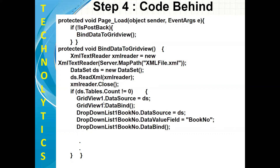My first control is GridView1. I'm writing GridView1 and the property DataSource — so GridView1.DataSource equals DS. I'm using the DataSource of my grid view as DS. But only by using the DataSource property, I cannot bind the data. For binding the data, I need to use the method GridView1.DataBind. These two lines will create the binding between the XML document and my grid view control.